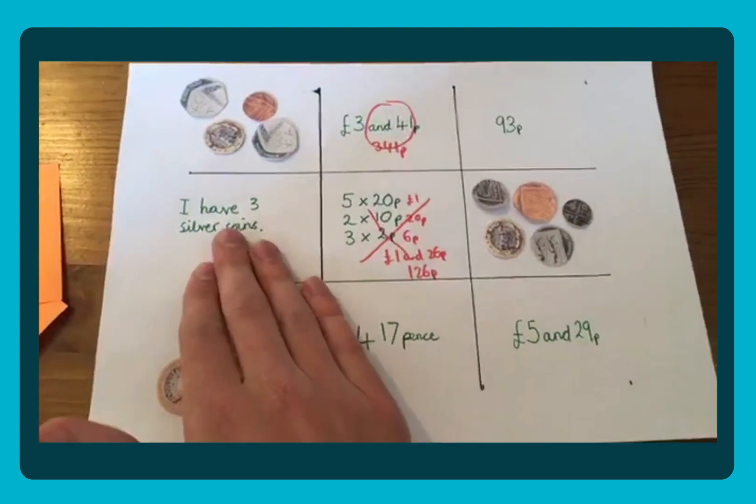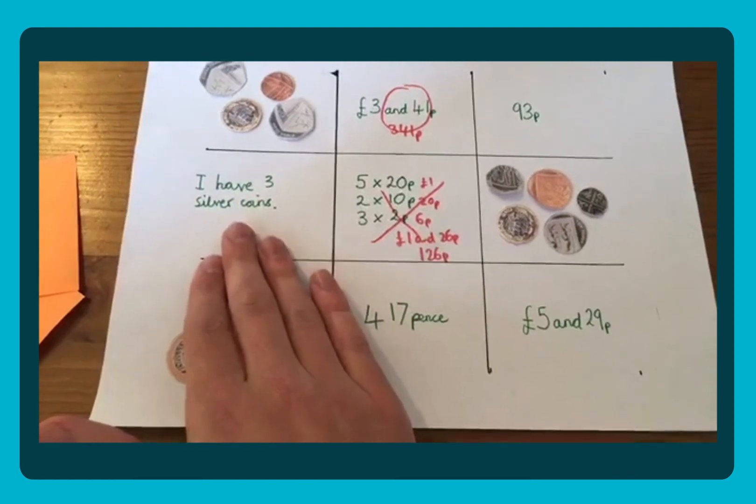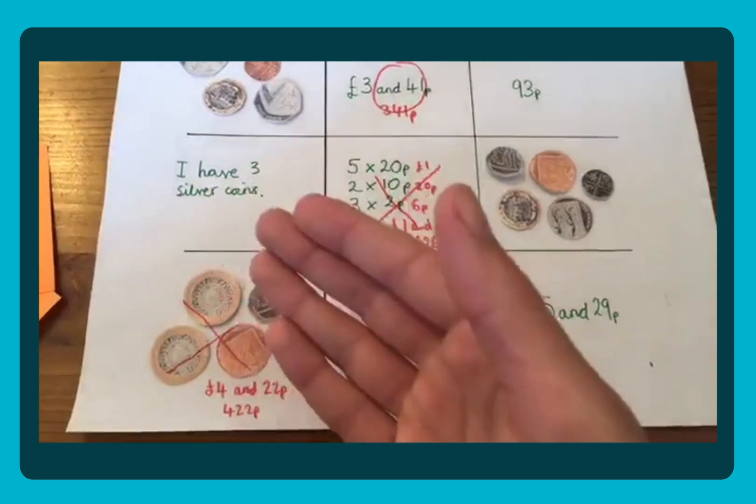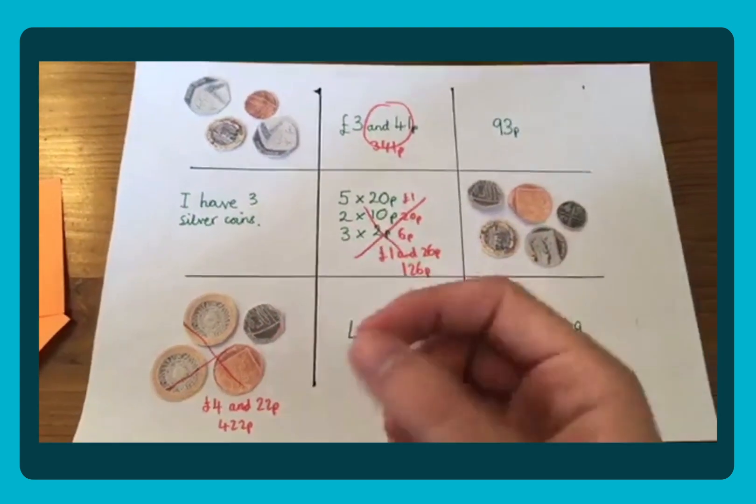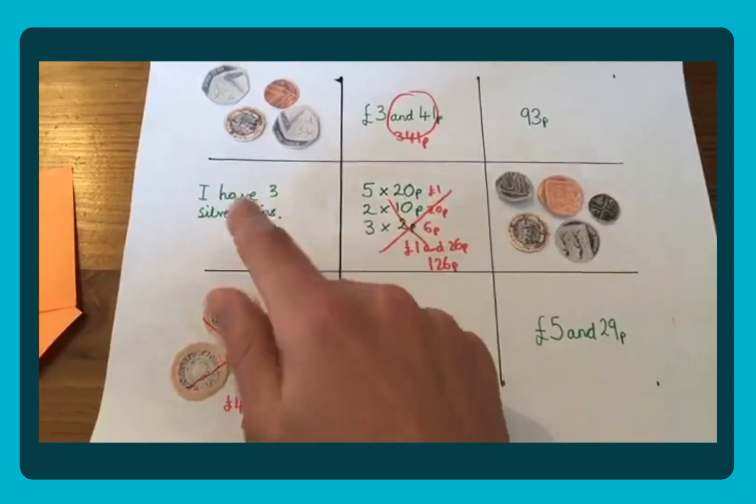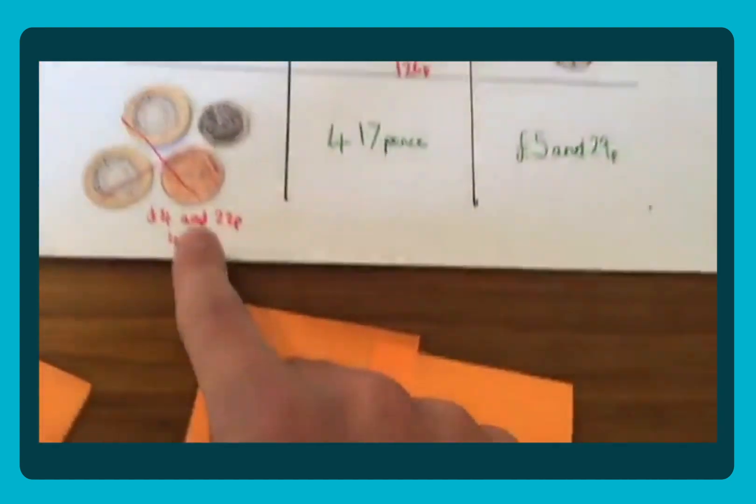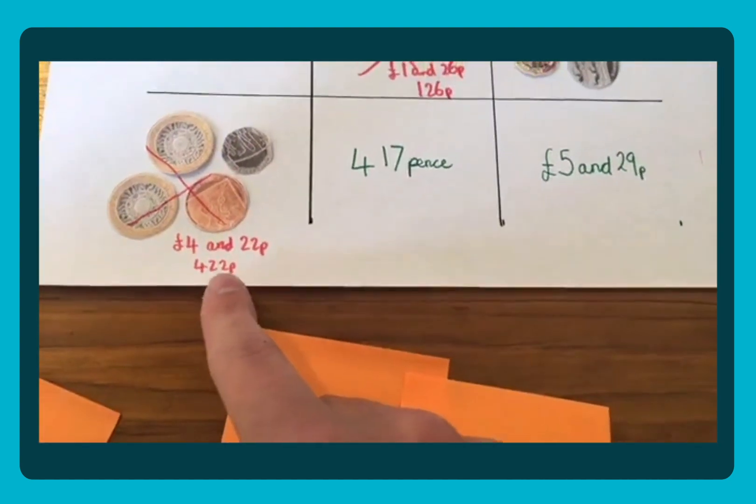Bit of a tricky one over here. I have 3 silver coins. So that could be any 5 pences, 10 pences, 20 pences, or 50 pences. So there's more than one answer to that one. But making sure once they have the answer, they write it as pounds and pence and pence as well, because it helps them understand that relationship between pounds and pence.